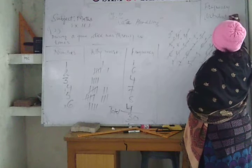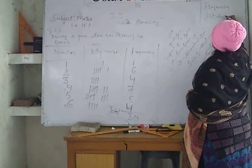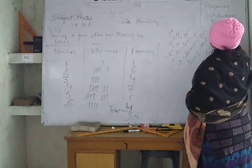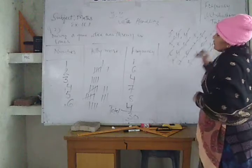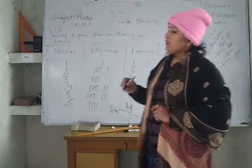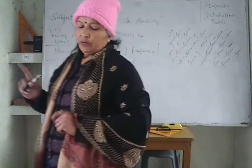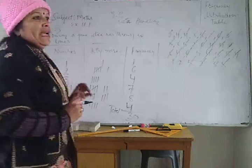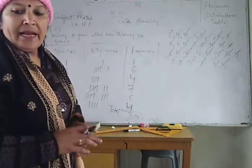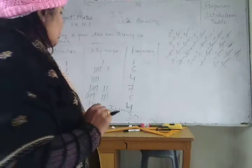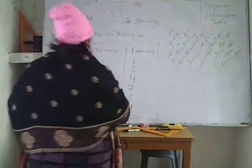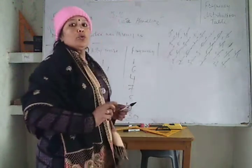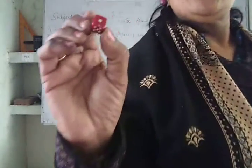Frequency distribution table. So the question I have taken is 16.1, question number 2. In this question, during a game a dice was thrown 30 times.